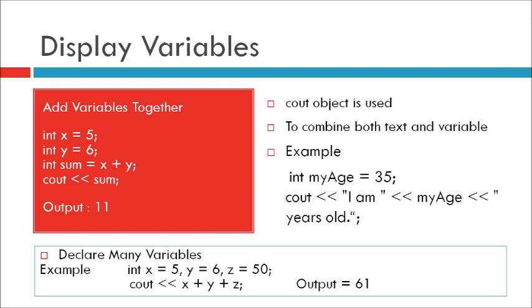Add variables together. To add variable to another variable, you can use the plus operator. For example, integer x equals 5, integer y equals 6, integer sum equals x plus y, cout sum. Output of this program is 11.